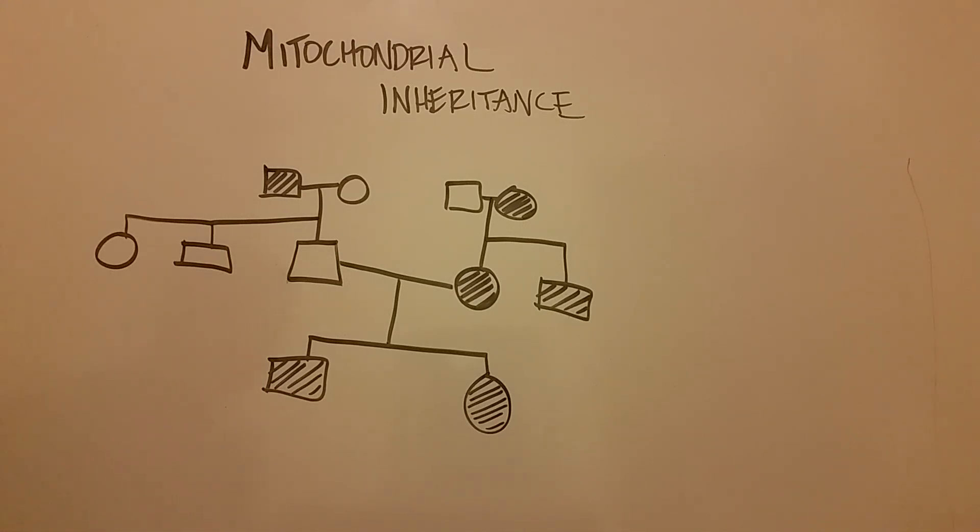As you know, a sperm mixes with an ovum to produce an offspring. The sperm is very small in comparison to the ovum, and only the ovum is large enough to contain its own mitochondria, to be its own self-supporting cell.